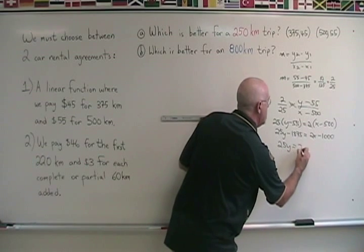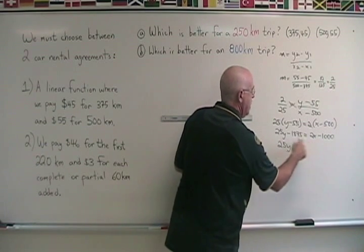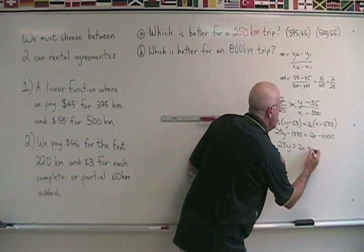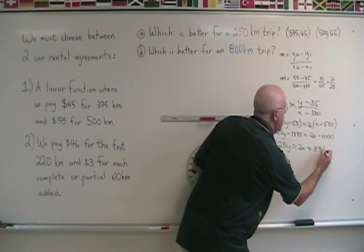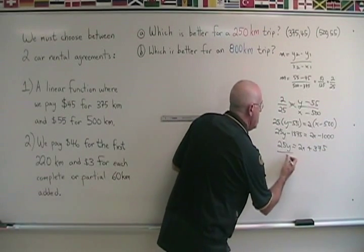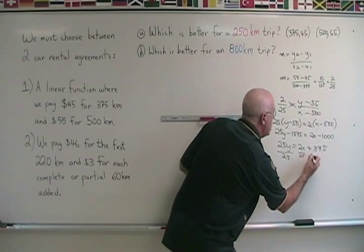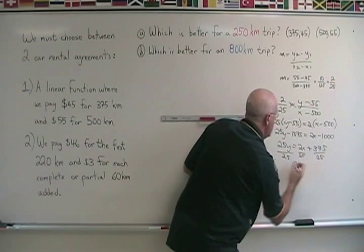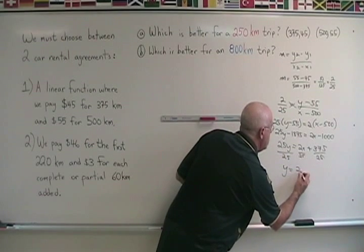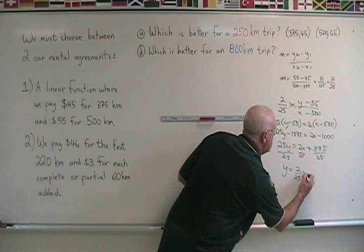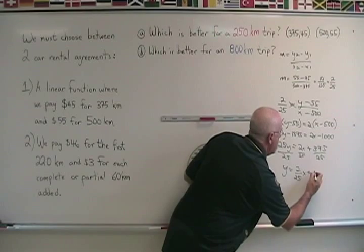25y minus 1000 plus 1375 is plus 375. And then, isolating my y, I get y is equal to 2/25 x plus 15.